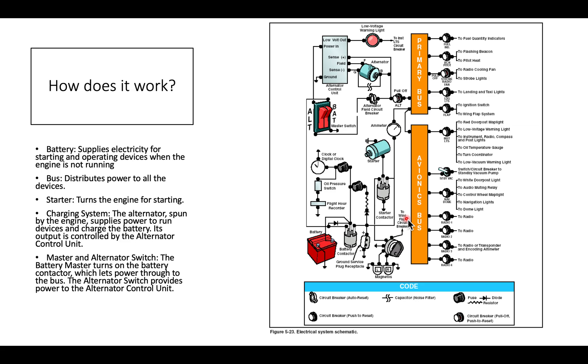It works by the battery supplying electricity for starting and operating devices when the engine is not running. The bus is simply a big bar that everything is tied to. It distributes power to all of the devices. The starter turns the engine for starting. The charging system, once the engine is running, provides enough power to run all your devices, plus charge the battery. And the alternator and master switches are what we as pilots use to control the system.